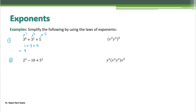Second example: 2 power 3 minus 10 plus 5 power 2. 2 power 3 means 2 multiplied 3 times, which gives 8. 10 stays the same. 5 power 2 means 5 multiplied 2 times, which gives 25. So you get 8 minus 10 plus 25, which simplifies to 23.